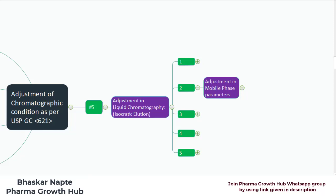Hello and welcome. My name is Bhaskar Napthey. I am from Pharma Grothab and in today's video we are going to talk about adjustment of chromatography conditions according to USP General Chapter 621, that is chromatography. We are going to talk about the adjustment in liquid chromatography in isocratic elution and specifically about the mobile phase parameters.